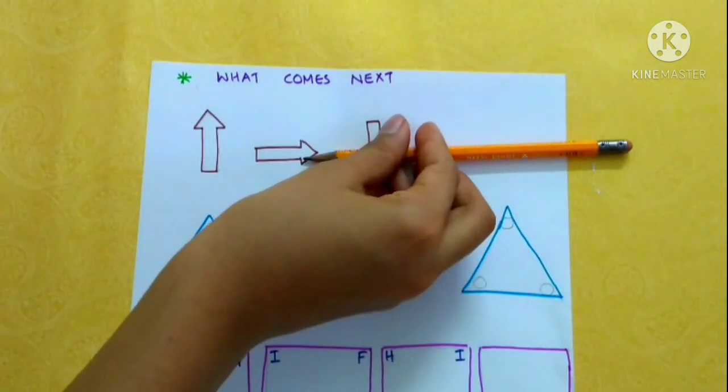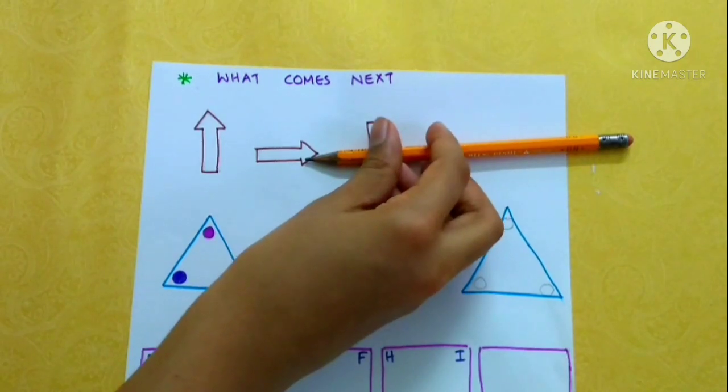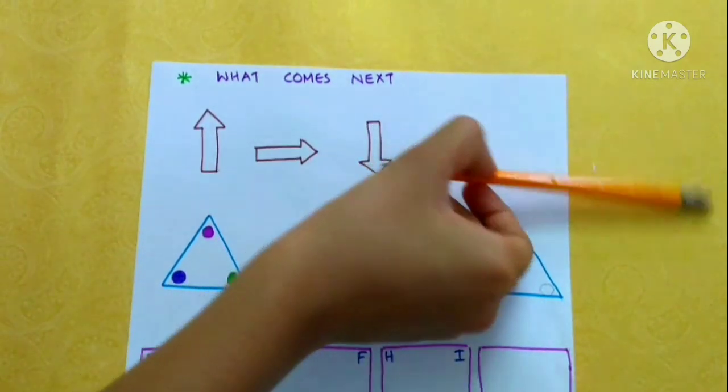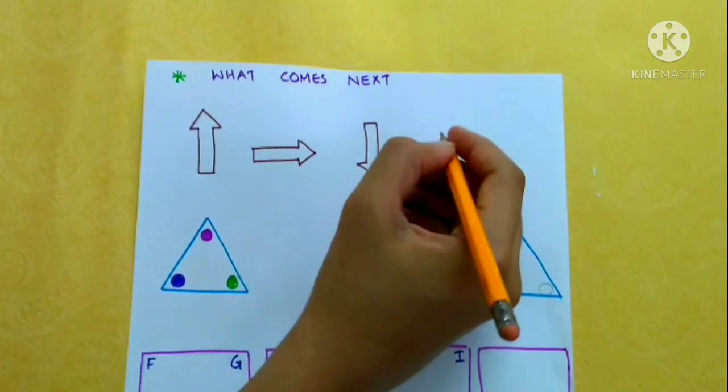Again when we move it, it points towards the left. So now we have to draw an arrow that points towards the left.